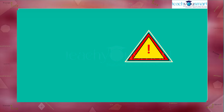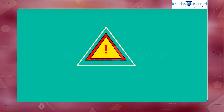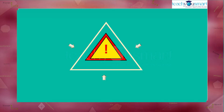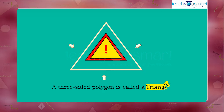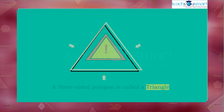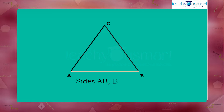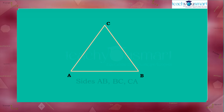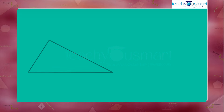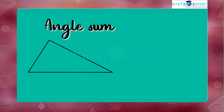We know that a polygon must have a minimum of three sides. A three-sided polygon is called a triangle. Here, ABC is a triangle having three sides: AB, BC, and CA, and angles: angle A, angle B, and angle C.